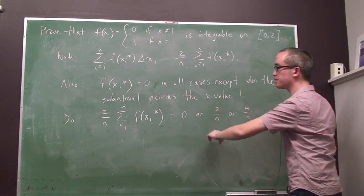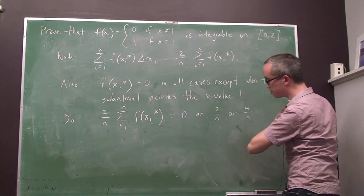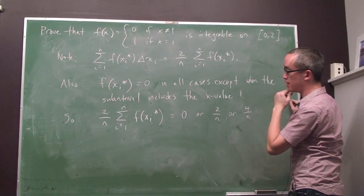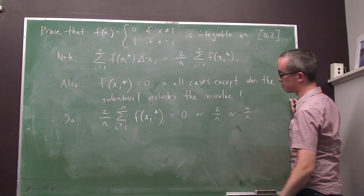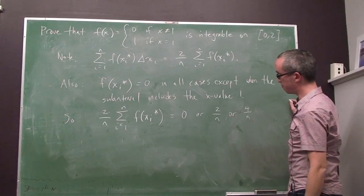But it doesn't matter, because we can now see that in all three of these cases, in all three possibilities, 0, 2 over n, or 4 over n, these are very clearly arbitrarily close to 0, provided n is sufficiently large.